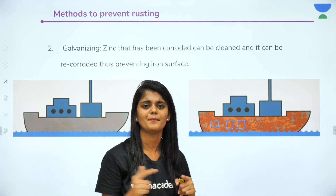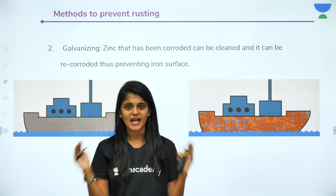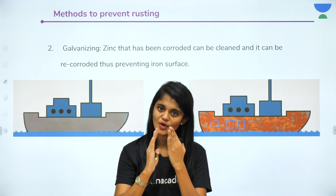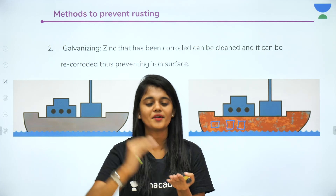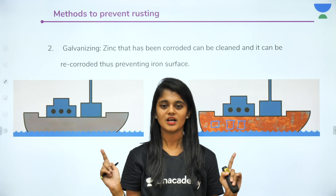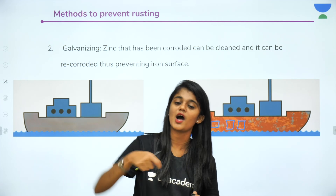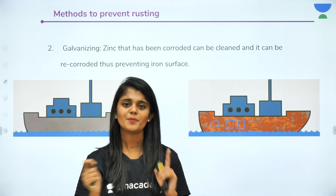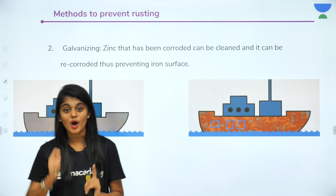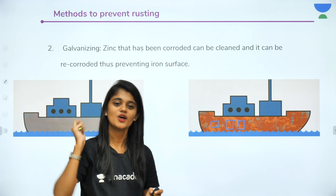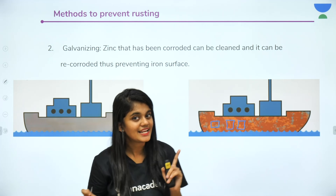The third prevention method is paint or coating. You coat the metal to prevent direct contact with oxygen. Whether by paint, oil, or grease, you are simply protecting the metal from direct exposure to atmospheric oxygen. This is how daily life oxidation — specifically rusting — is prevented.